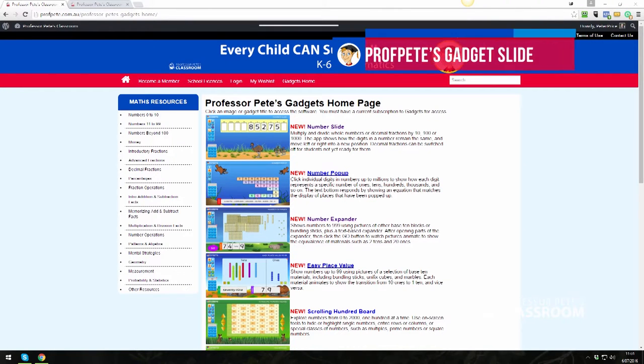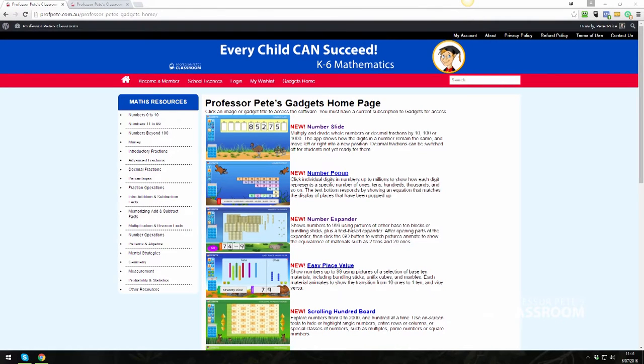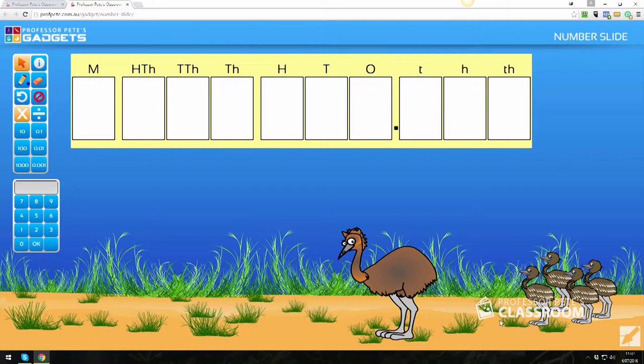The fifth and final resource that I recommend for teaching students what happens when we multiply by powers of 10 is a virtual or on-screen number slide such as this one on our website at Professor Pete's Gadgets, simply called Gadgets number slide. This has a number of resources to support the use of the gadget including lesson ideas and other resources you can use with students as well as a short video walkthrough. But you can expand the gadget to fill the screen like so.